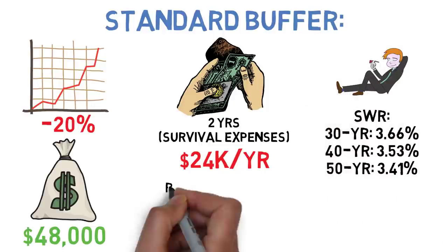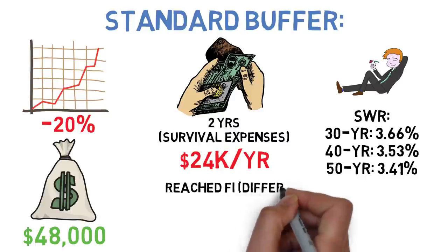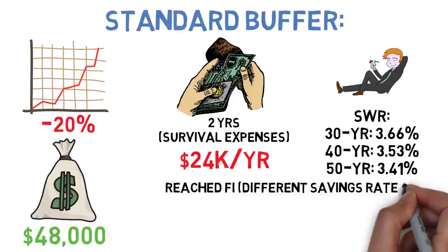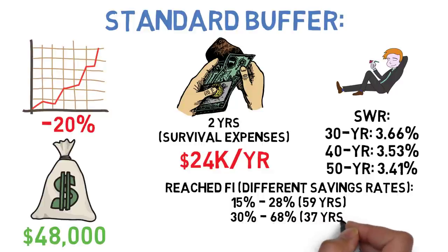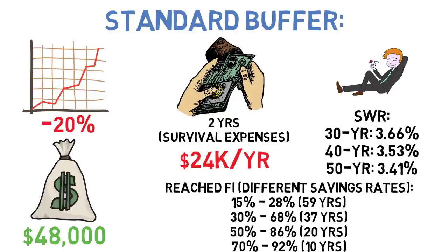Looking at every possible starting year since 1927 someone investing 15% of their income would have reached financial independence about 28% of the time. With savings rates of 30, 50, and 70% those success rates would jump to 68, 86, and 92% respectively.